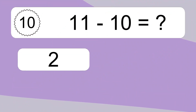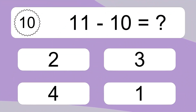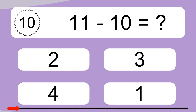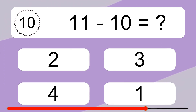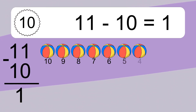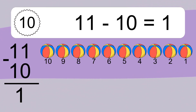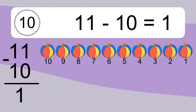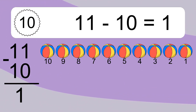11 minus 10 equals what? 11 minus 10 equals 1. Let's count it: 10, 9, 8, 7, 6, 5, 4, 3, 2, 1.